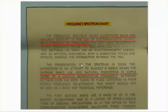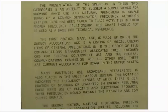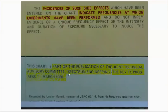But this chart goes to the 5G, the millimeter wave, which we have been using already — radar. You can read this yourself if you want to. Incidences of such side effects — because they do have, as part of the chart, side effects — indicates the frequencies at which experiments have been performed. And the chart is part of the publication of the Joint Technical Advisory Committee, Spectrum Engineering, The Key to Progress, March 1968.